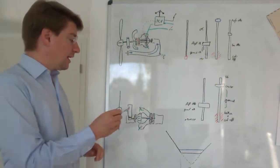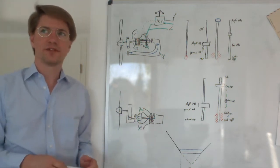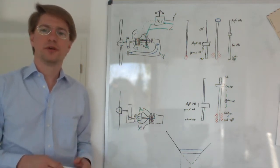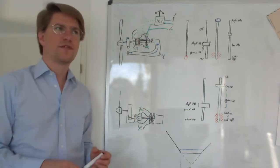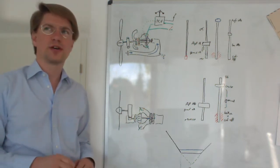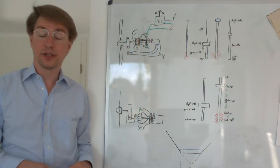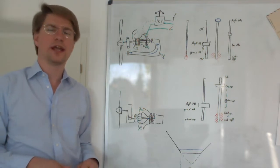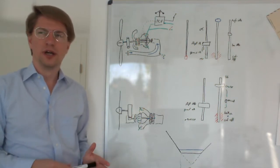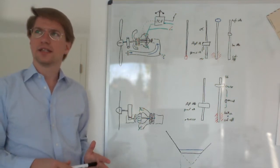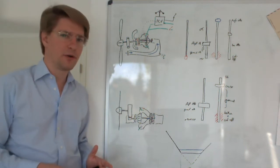As opposed to that, the fixed single shaft turboprop engine is found on a little more exotic planes like the Dornier 228, the Mitsubishi MU-2, and the Rockwell Turbo Commander.